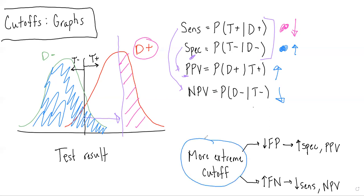is that a more extreme cutoff will lead to a decrease in false positives with an increase in specificity and PPV, and will also lead to an increase in false negatives with a decrease in sensitivity and a decrease in NPV.